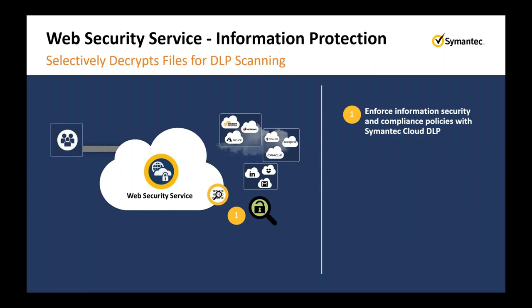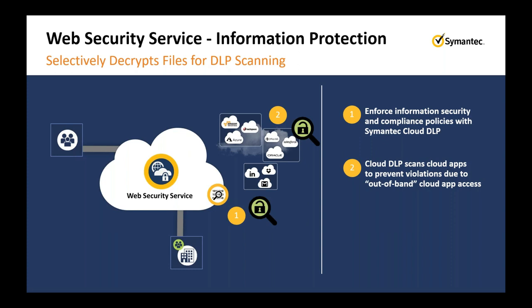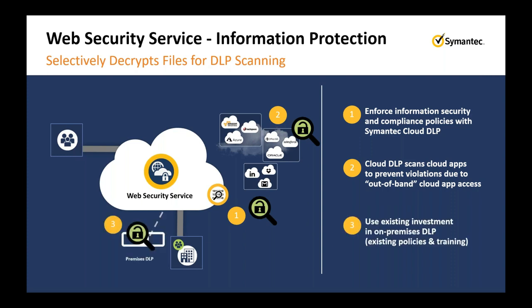Information protection is an increasingly required capability within web security products. We integrate with Symantec Enterprise DLP, enforcing those policies in the cloud and maintaining compliance with cloud applications and traffic. A key benefit is our cloud detection service — we scan content in the cloud rather than backhauling it to on-premise, avoiding latency. Existing investment in on-premise DLP is preserved: all those policies, training workflows, and orchestration can still be managed from on-premise DLP, but we push policy to WSS and apply information protection to all traffic passing through — including traffic from roaming users outside the corporate network.